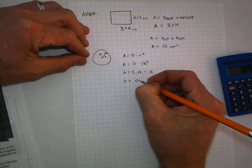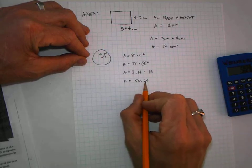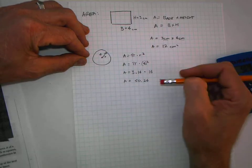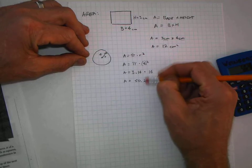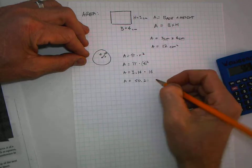But we need to round to the nearest tenth. 50.24—here's the tenth place. The next number is 4, which is less than 5, so we round down. The answer is 50.2, but 50.2 what?